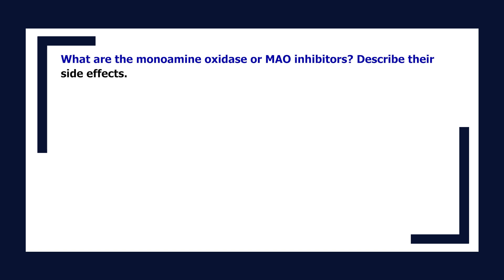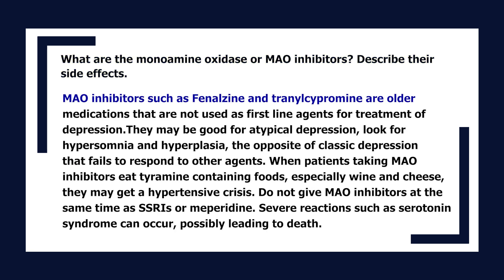What are the MAO inhibitors and their side effects? MAO inhibitors such as phenelzine and tranylcypromine are older medications not used as first-line agents. They may be good for atypical depression — look for hypersomnia and hyperphagia, the opposite of classic depression — that fails to respond to other agents. When patients taking MAO inhibitors eat tyramine-containing foods, especially wine and cheese, they may get a hypertensive crisis. Do not give MAO inhibitors at the same time as SSRIs or meperidine, as severe reactions such as serotonin syndrome can occur, possibly leading to death.